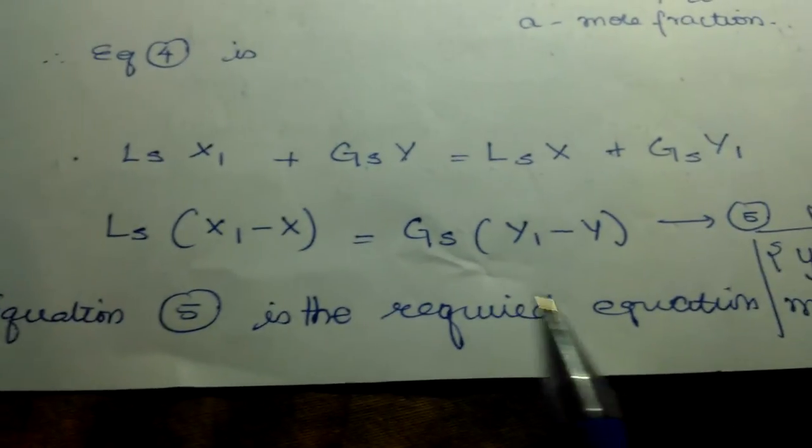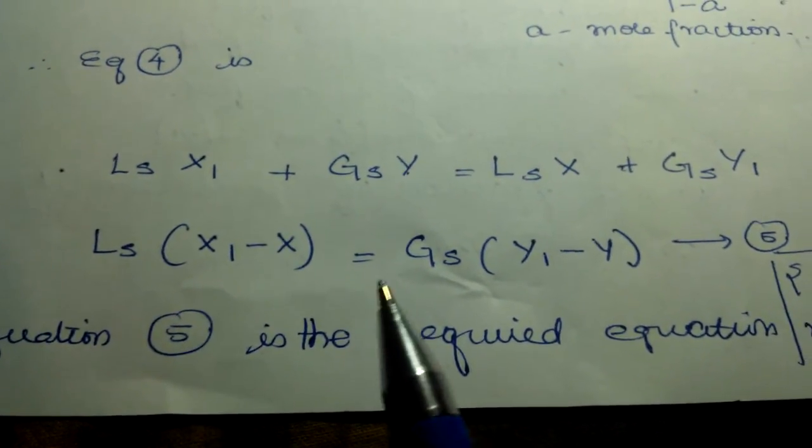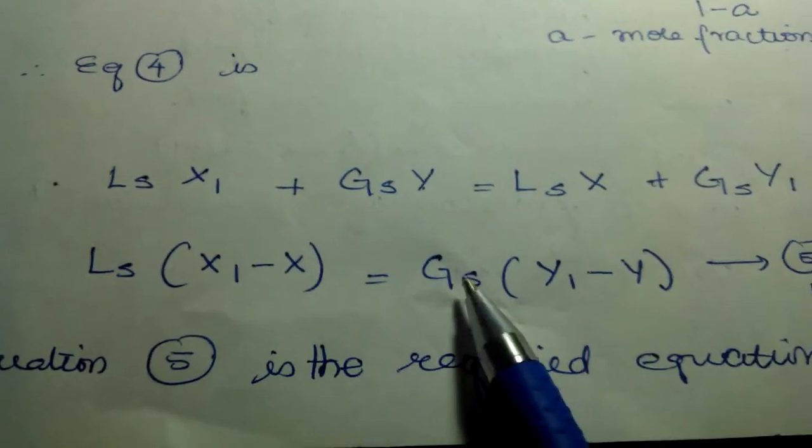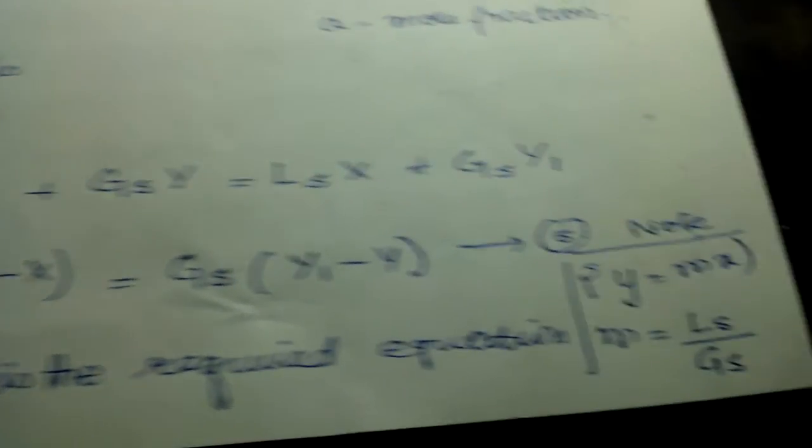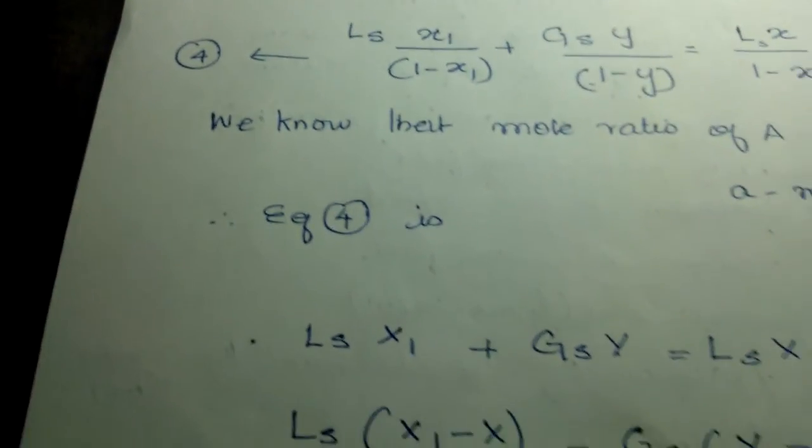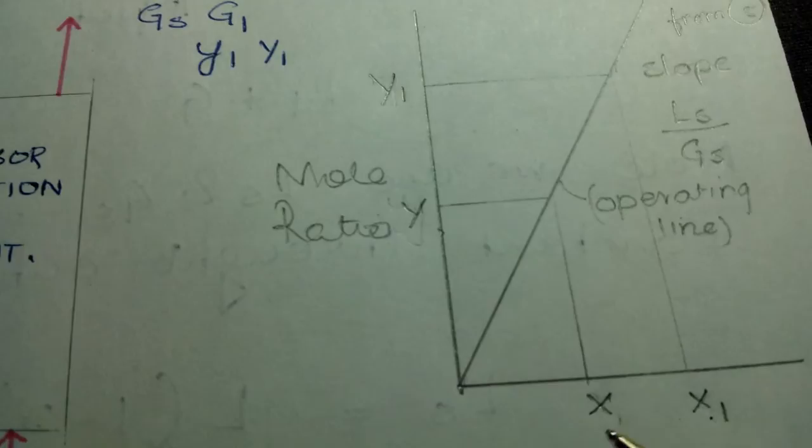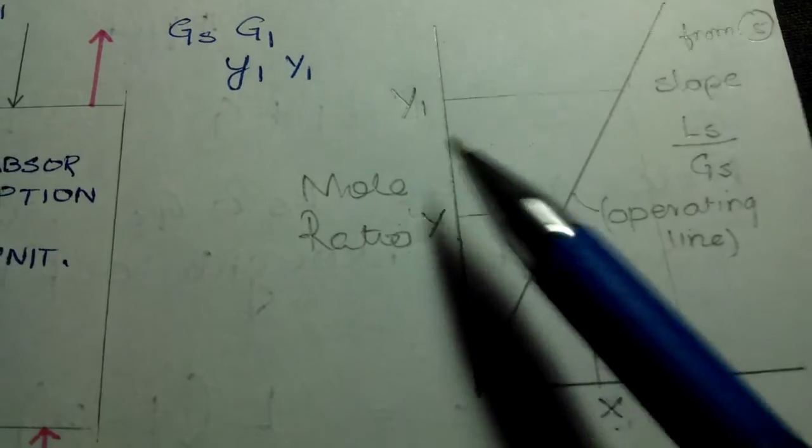If you look at this, it resembles the straight line equation y equals mx. Transfer the GS here and your m value would be LS by GS. Finally, on plotting this, your slope would be LS/GS, with X1 minus X and Y1 minus Y. That is your single stage unit.